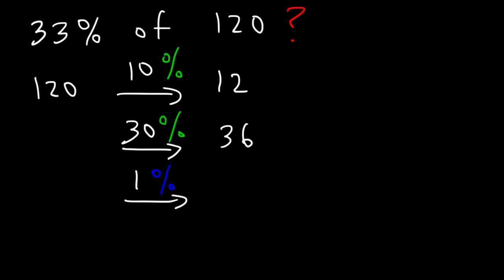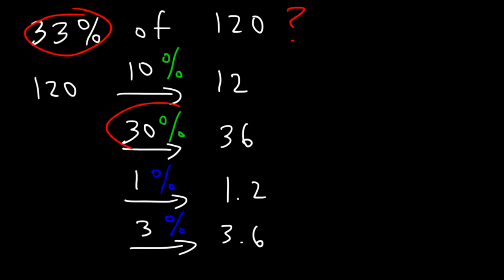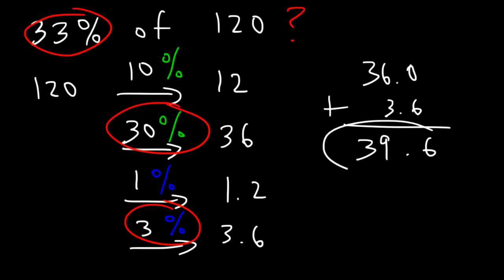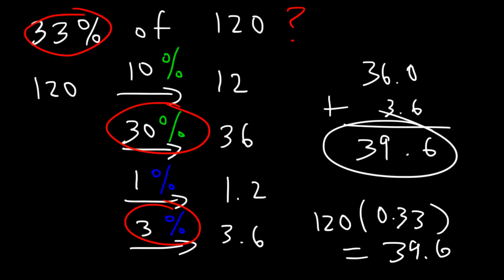If 10% is 12, then 1% is 12 divided by 10, or 1.2 — just move the decimal one unit to the left. So 3% is 3 times 1.2. Since 1.2 times 3 is 3.6, and we're looking for 33%, we add 30% and 3%: 36.0 plus 3.6 equals 39.6. Confirming with a calculator: 120 times 0.33 equals 39.6.